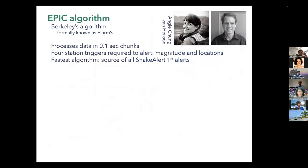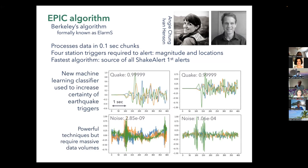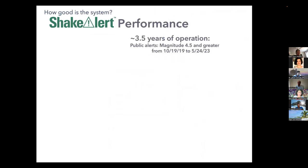Berkeley developed an algorithm called EPIC, primarily developed by Angie Chung and Ivan Henson — a seismologist and developer respectively. It processes data in 0.1-second chunks and uses just four seismic stations to issue the first alert. It is designed to be the fastest algorithm to get alerts out. The research continues, including using machine learning classifiers to recognize P-waves and S-waves and squeeze out additional warning time.